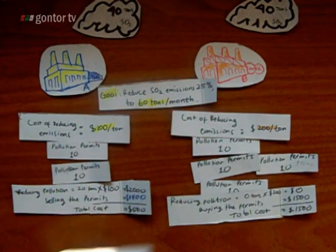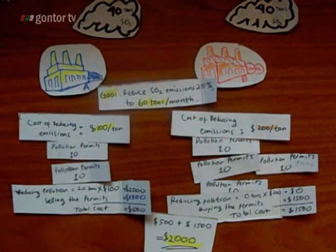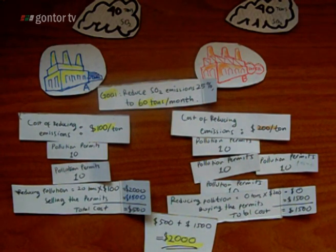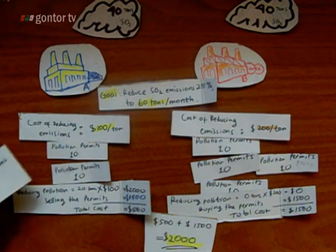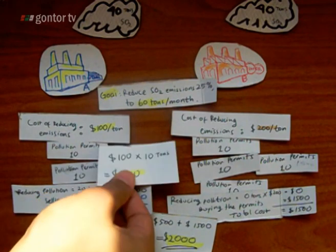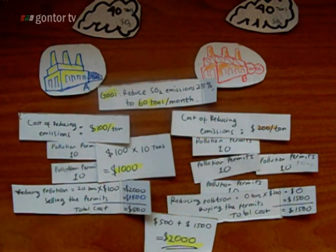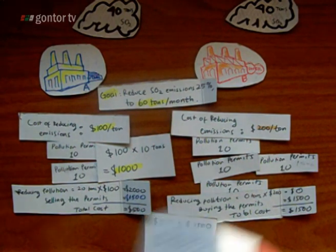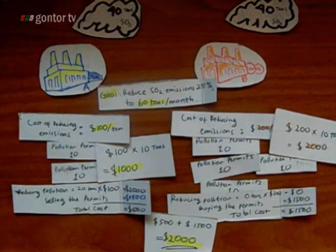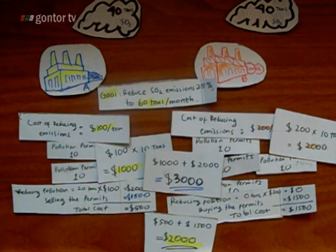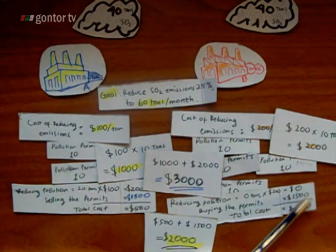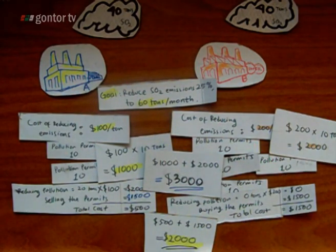The total cost of the two companies is $500 plus $1,500, equaling $2,000. Compare this with the first situation: company A needed $1,000 and company B needed $2,000, for a total of $3,000. So now it's cheaper for A, cheaper for B, and cheaper for both overall.